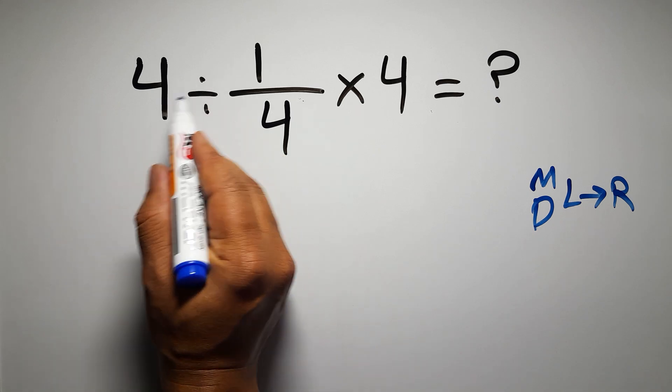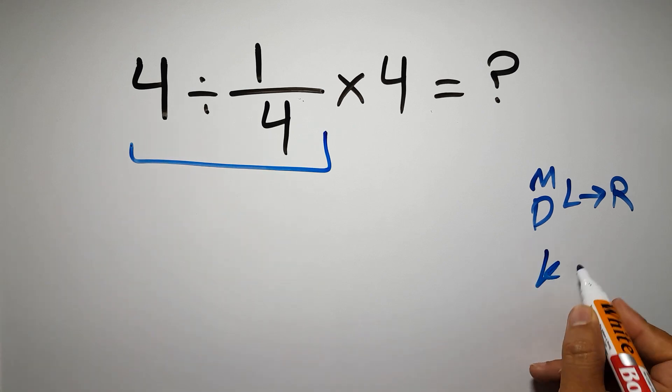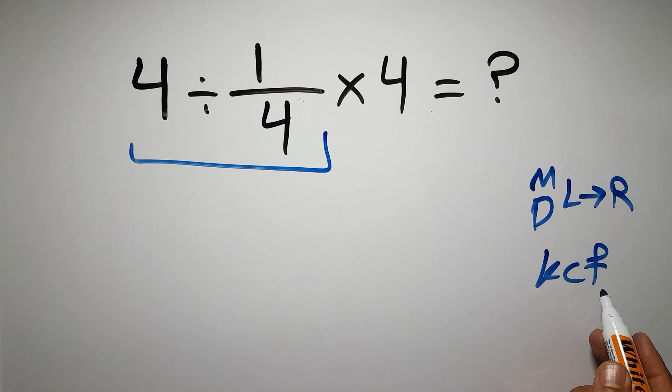So first this division, 4 divided by 1 over 4. According to the KCF rule, K stands for keep, C stands for change, and F stands for flip.